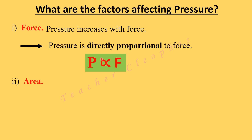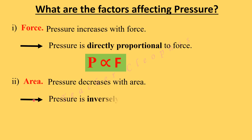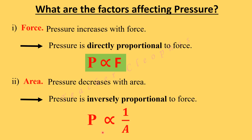Our second factor is area. Pressure decreases with area — as area increases, pressure decreases, and as area decreases, pressure increases. This therefore implies that pressure is inversely proportional to area. We can also say that pressure is indirectly proportional to area.